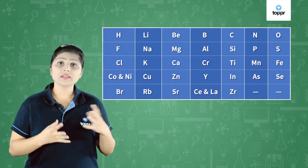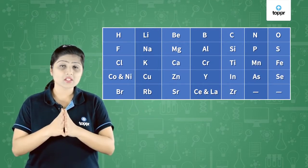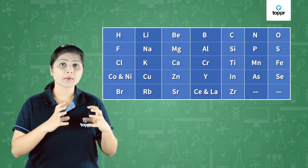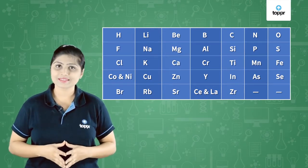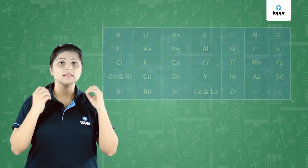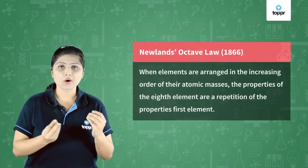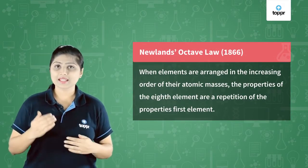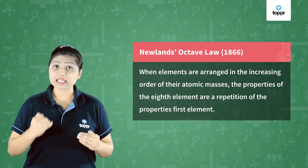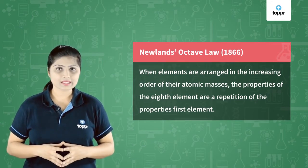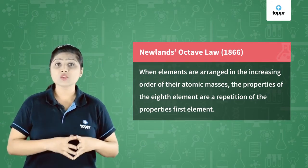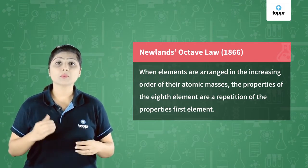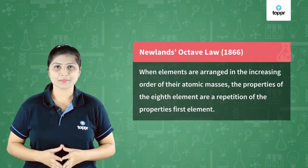From this we can find out that the properties of every first element is similar to the properties of the eighth element in the list. This is what we call Newland's Octave Law. It states that when elements are arranged in the increasing order of their atomic masses, the properties of every eighth element is a repetition of the properties of the first element.